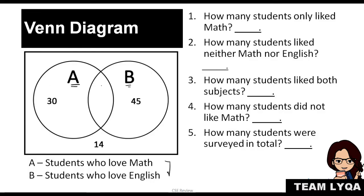Inside circle A, there are 30 students who love math. Over here, there are 45 who love only English. But we have an intersection right here — those are the students who like both math and English. And the 14 outside both circles means those students don't like math or English — probably recess is their favorite subject!